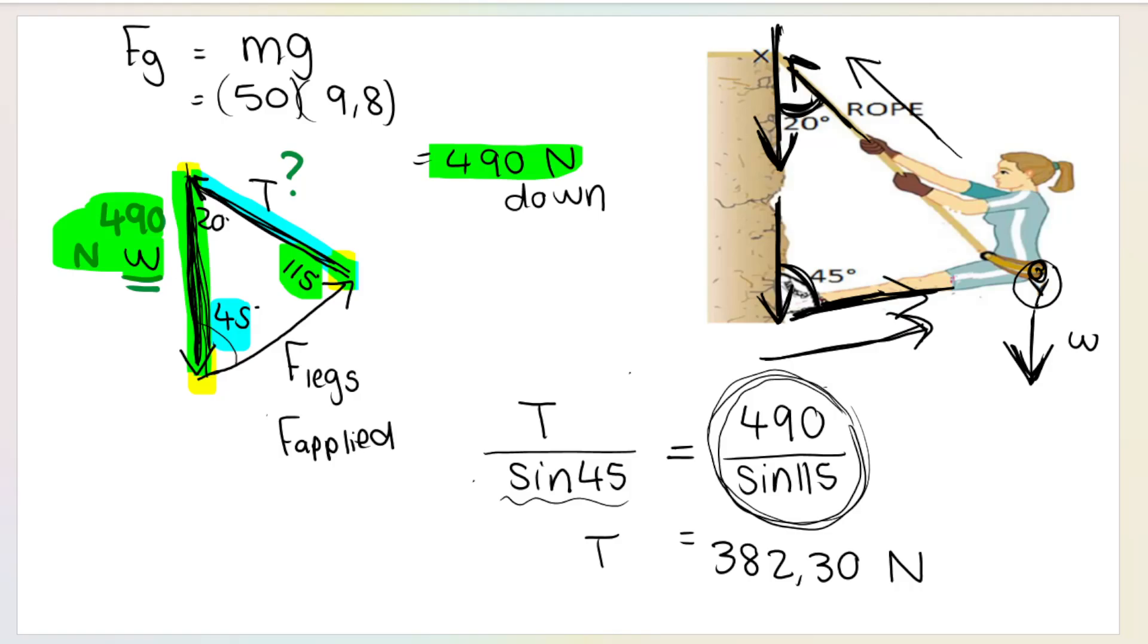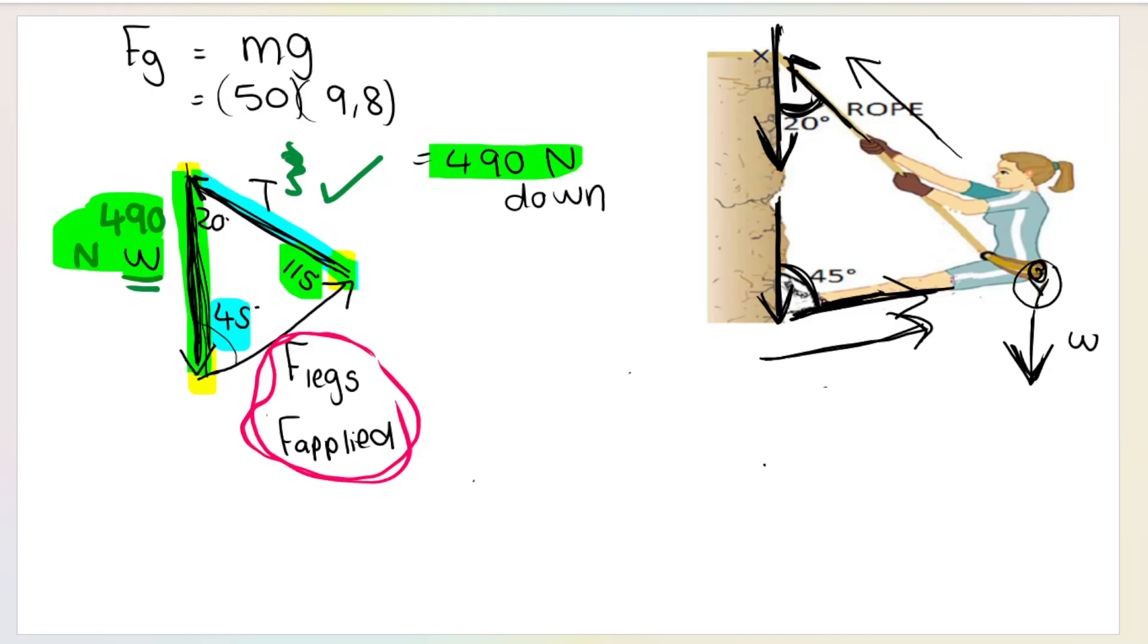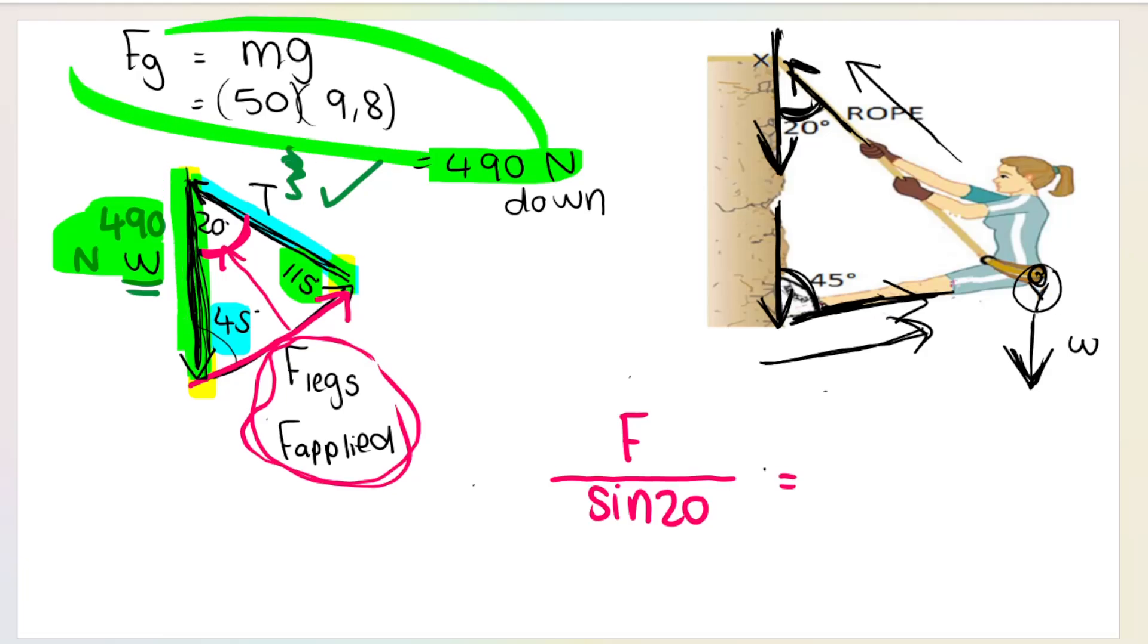Now I want you to try and get the second force, which is the force of legs. I'm looking for the magnitude of that vector. I'm going to call it F applied or just F. We divide it by the sine of the angle opposite that side, sine of 20. And we make it equal to a fraction where I know the top and the bottom. I know the weight. It's 490 divided by which angle is opposite 490? 115. So sine 115. Then again, work this out. Take the divide by sine 20 over. It's going to become multiplied by sine 20. And I get 184.91 Newton.